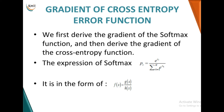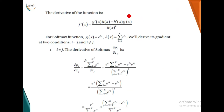Now we move to the gradient of the cross entropy function, which is a bit more complex. First, we must determine the gradient of the softmax function, which is majorly used as an activation function for classification. The softmax function is expressed in the form of g(x) over h(x), where e to the power z_i is g(x) and the summation of e to the power z_k is h(x).